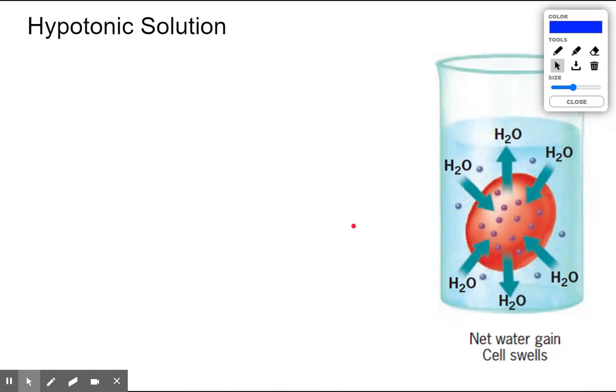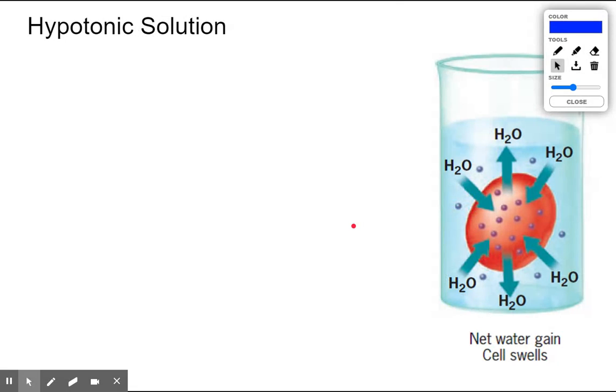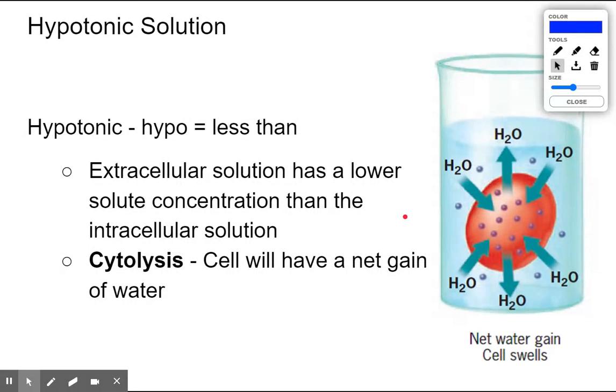The final one we have is hypotonic. In a hypotonic solution, the word hypo means less, so water is going to be moving into these cells. I like to say hypo cyto, hypo cyto—hypo solutions make a hippo because the cells get really large. We have a net movement of water going into the cells.